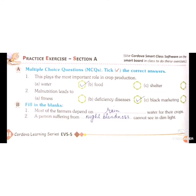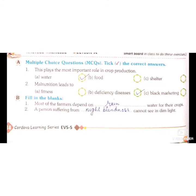Now it's time for the book exercises. Which plays the most important role in crop production — water, food, or shelter? The answer is water. Malnutrition leads to deficiency diseases. Most farmers depend on rain water for their crops.